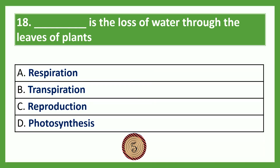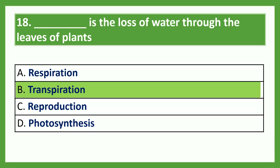Dash is the loss of water through the leaves of plants. Option A: respiration; Option B: transpiration; Option C: reproduction; Option D: photosynthesis. The answer is Option B, transpiration. Transpiration is the loss of water through the leaves of plants.